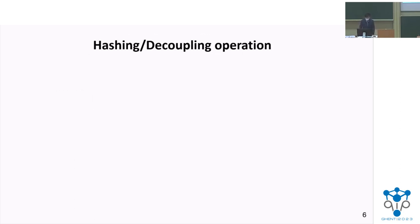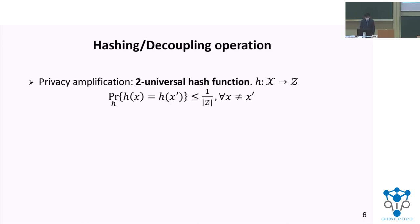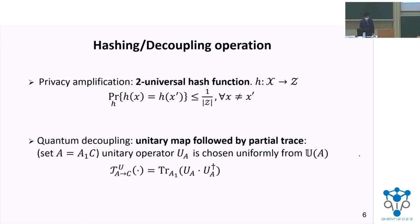We consider two different operations on privacy amplification and quantum decoupling. For privacy amplification, we apply the two-universal hash function, where the probability of different X mapping to the same Z should be equal to or less than 1 over the cardinality of Z. For quantum decoupling, we apply the unitary map followed by a partial trace, where the unitary operator is chosen uniformly from the unitary group on the added system.